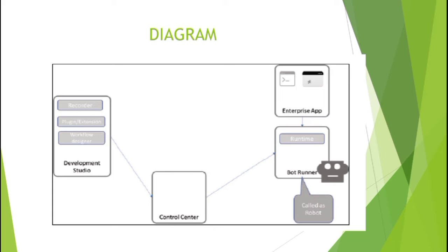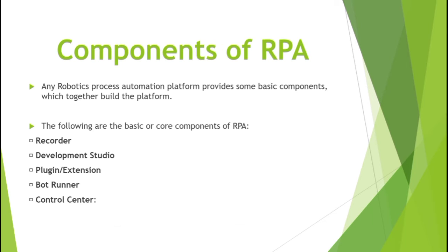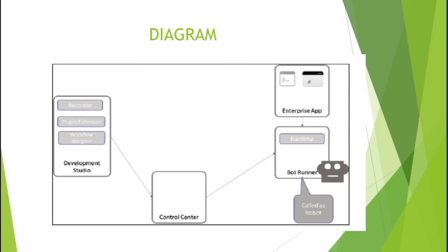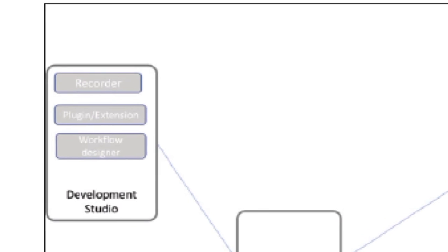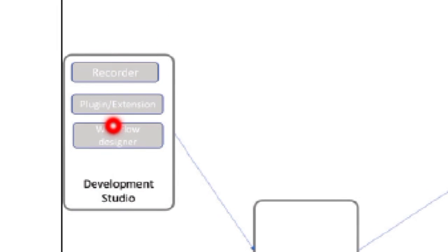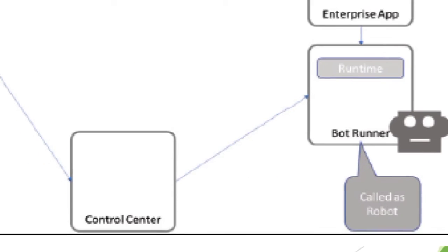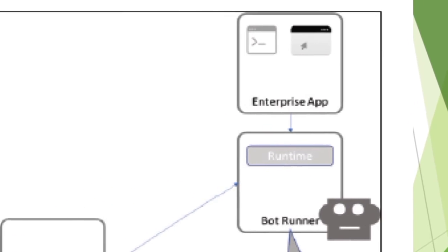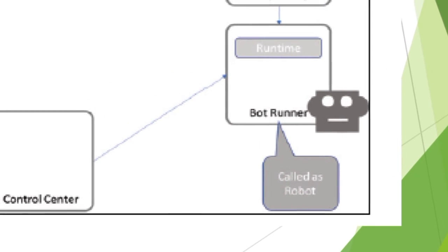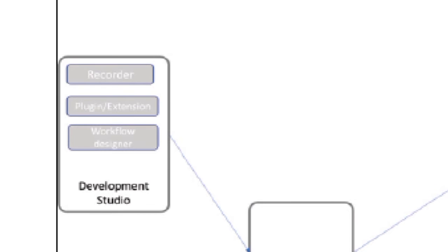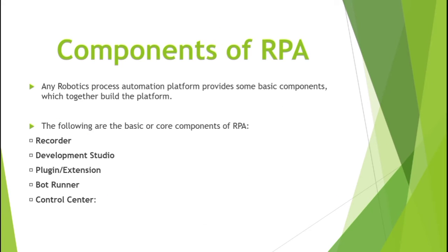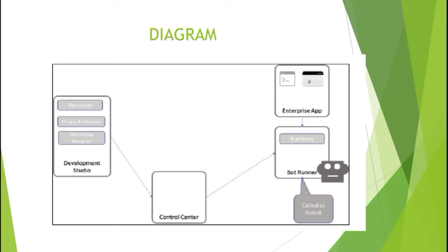Looking more closely, the components are: Recorder, Development Studio, Plugin or Extension, Bot Runner, and Control Center. Inside the Development Studio there are sub-components: Recorder, Plugin or Extension, and Workflow Designer. Control Center and Bot Runner are separate components.